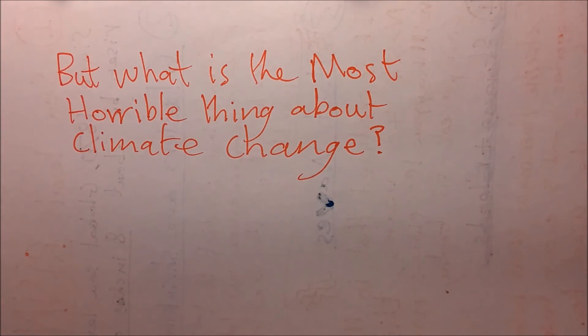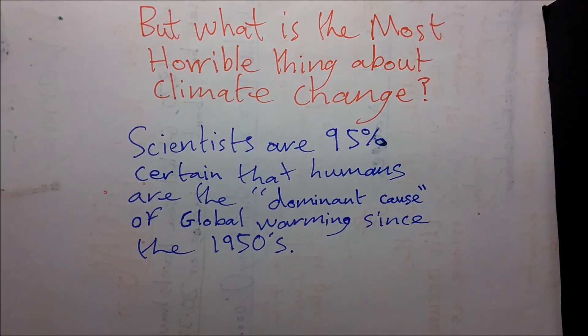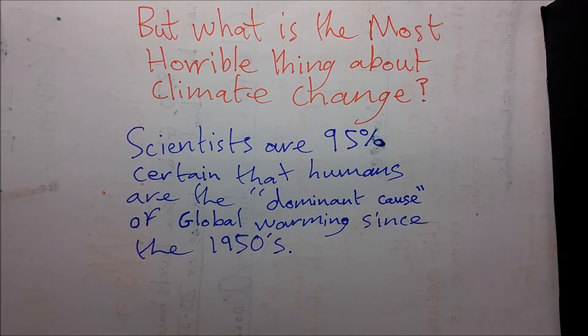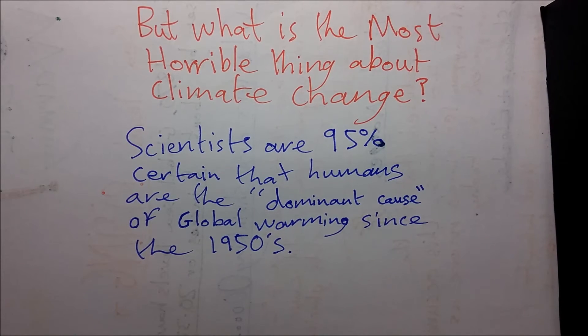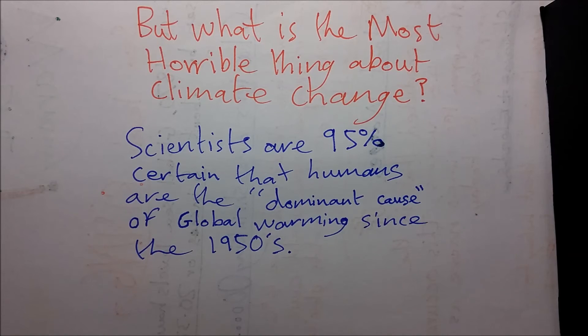But let me ask you, what is the most horrible thing about climate change? The most horrible thing about climate change is that scientists are 95% certain that humans are the dominant cause of global warming since the 1950s. Now how, as a species, an intelligent species, have we allowed ourselves to do that?